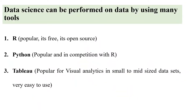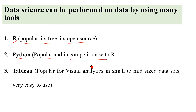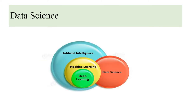Data science can be performed using some tools. The three main tools are: R programming — a popular, free, open-source tool; Python — also popular and competitive with R; and Tableau — popular for visual analytics on small and mid-sized data sets and very easy to use. These are the three popular tools in data science.